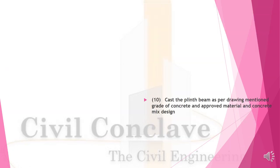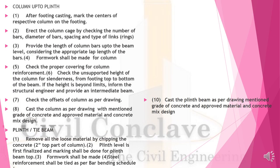Column up to plinth: After footing casting, mark centers of respective columns. Erect the column cage checking the number and diameter of bars. Provide the length of column bars up to plinth level with appropriate lap length. For column formwork, check proper cover and unsupported height for slenderness from footing top to bottom of beam. If the height exceeds the limit, inform the structural engineer and provide an intermediate beam. Check offsets as per drawing.